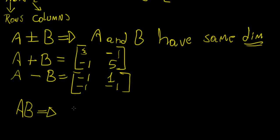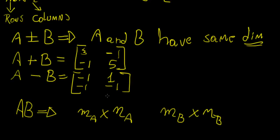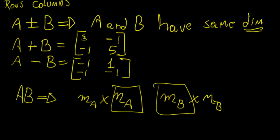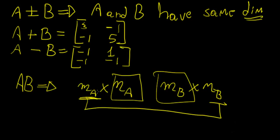Matrix multiplication is possible only if the following condition is met. Let's say we have matrix A with dimensions MA times NA, and matrix B with dimensions MB times NB. Multiplication is only possible if NA is equal to MB — so if the number of columns in A equals the number of rows in B. The resulting matrix will have dimensions MA by NB.